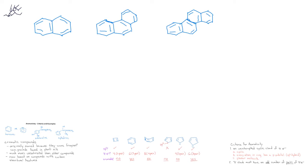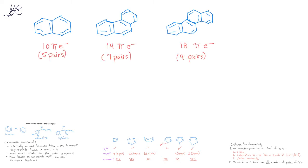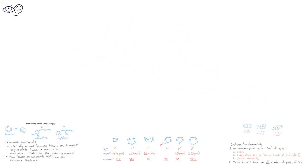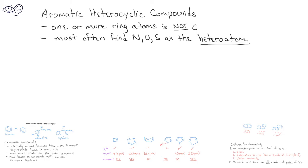These other structures would also be aromatic. You might want to take some time to count the pi electrons and confirm that they have an odd number of pairs of pi electrons. In all of the compounds we've seen previously, the aromatic compounds and specifically the rings in the aromatic compounds have been composed of carbons. However, there's another class of compounds known as aromatic heterocyclic compounds that are also aromatic. Heterocyclic compounds have one or more atoms in the ring that are not carbon. The most frequent non-carbon atoms in heterocyclic compounds are nitrogen, oxygen, and sulfur.